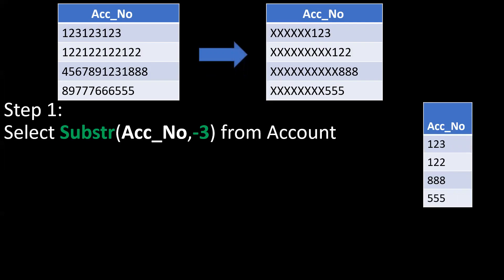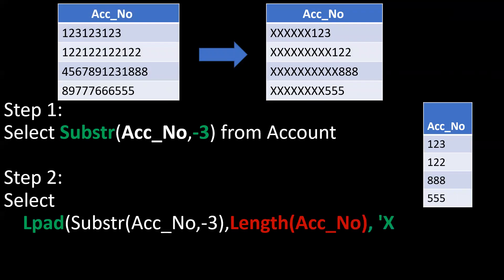So we get the last three digits of the account number. Then by using LPAD together with the LENGTH function — since we don't know the exact length of the account number — we use the LENGTH function to handle that dynamically. As the length is 10, we extract the last three digits and pad the rest of the characters with 'X'.